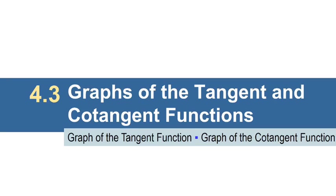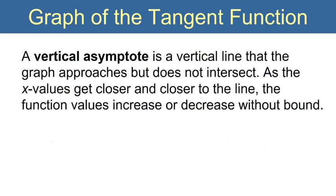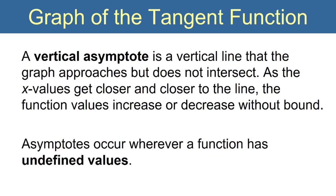First of all, with the graphs of the tangent and cotangent functions, we'll encounter what's called vertical asymptotes. A vertical asymptote is just a vertical line that the graph approaches but does not intersect. What happens is the x-values get closer and closer to the line, but the function values increase or decrease without bound, making the graph look like it's running straight up or straight down the vertical asymptote. Asymptotes occur wherever a function has undefined values, and tangent has undefined values at the odd π/2's, while cotangent has undefined values at the whole π's.